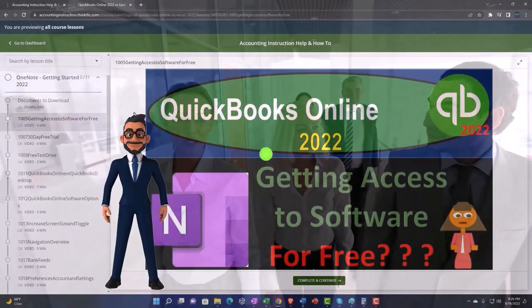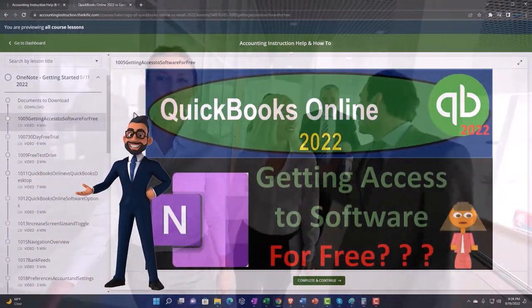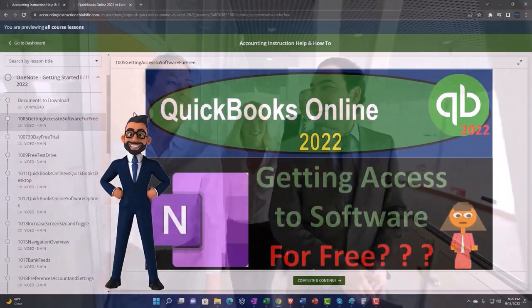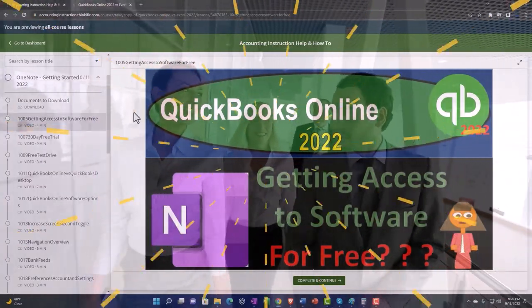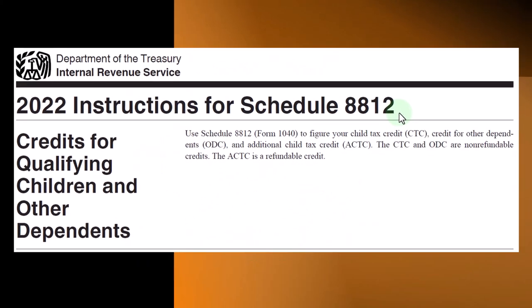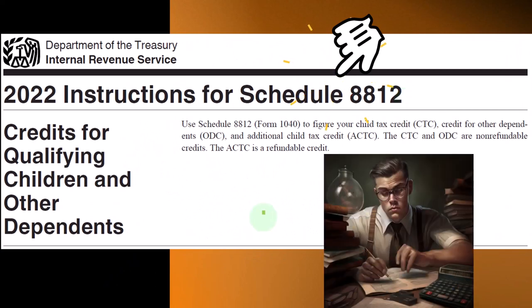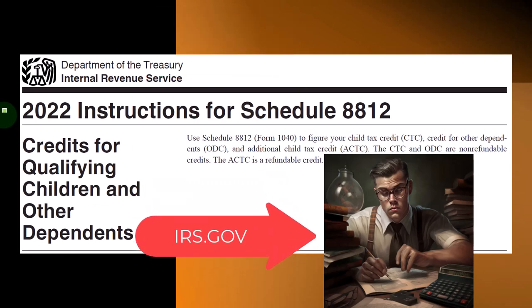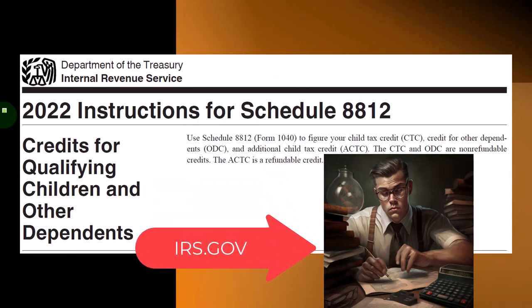Click the link below for a free month membership to our website and all the content on it. Most of this information comes from the instructions for Schedule 8812, Credit for Qualifying Children and Other Dependents, Tax Year 2022, which you can find on the IRS website at irs.gov.